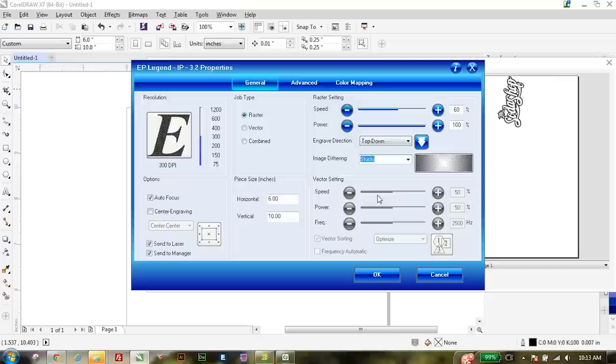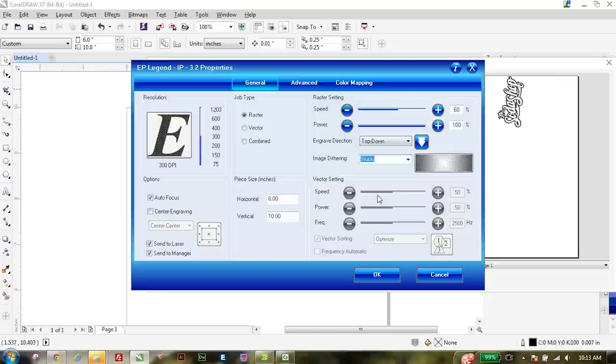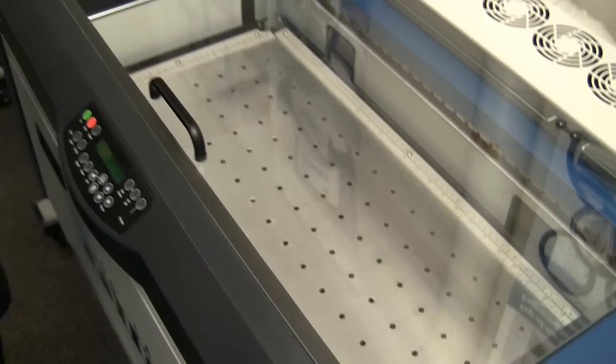And the other important thing for when you're working with glass is to change your image dithering. So here I usually use Stucky. So we'll go ahead and change that. And it's on its way to the laser.